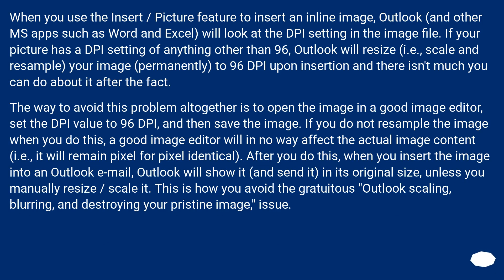When you use the Insert Picture feature to insert an inline image, Outlook and other MS apps such as Word and Excel will look at the PPI setting in the image file. If your picture has a PPI setting of anything other than 96, Outlook will resize — i.e., scale and resample — your image permanently to 96 PPI upon insertion, and there isn't much you can do about it after the fact. The way to avoid this problem altogether is to open the image in a good image editor, set the PPI value to 96, and then save the image.